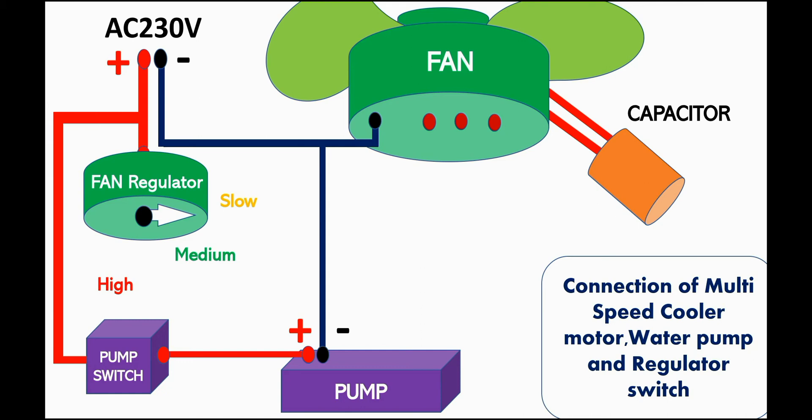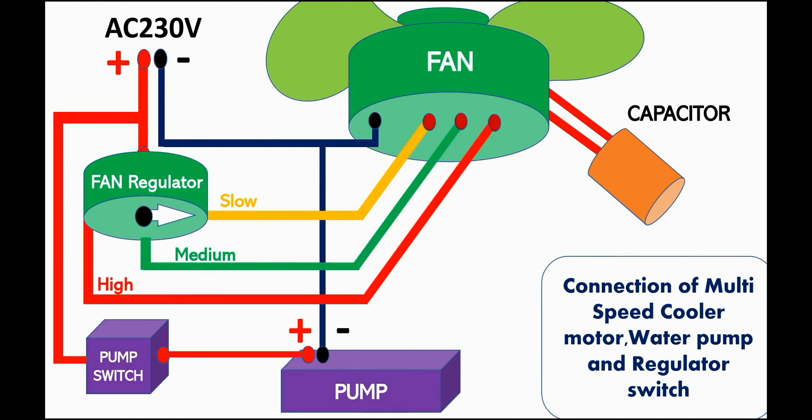Connect the fan output terminal into any one of the fan phase terminals separately. Then switch on the power supply and rotate the regulator switch one by one, slowly. Observe and compare the speed of fan with the position of regulator switch.